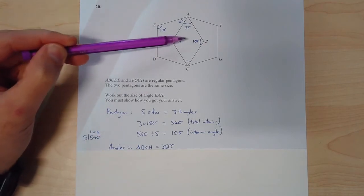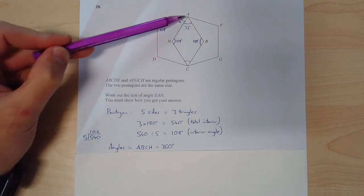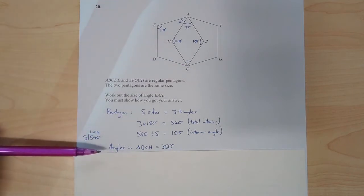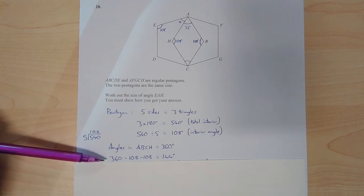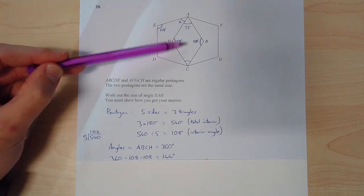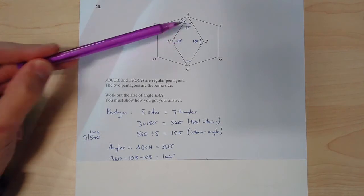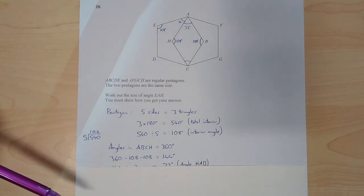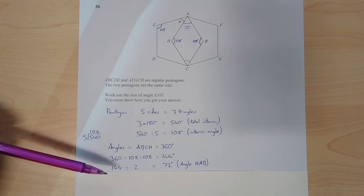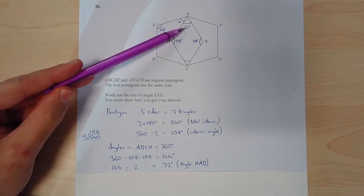So both of those are 108. And I know that angles in a four-sided shape add up to 360. So if I do 360, take away those two 108s, I'm left with 144. So these two add to 144. And then if I just halve it because they're the same, it gives me 72. So that angle there is 72 degrees.